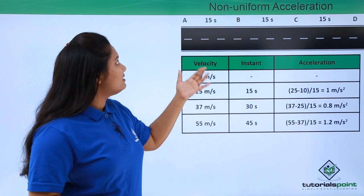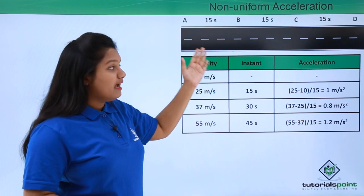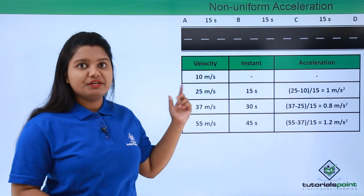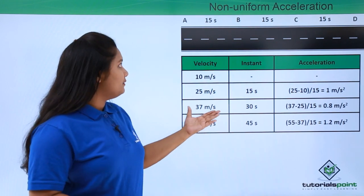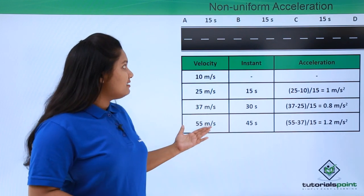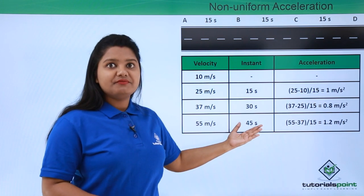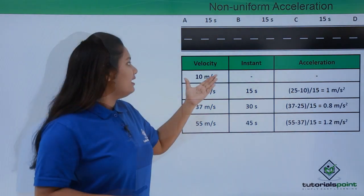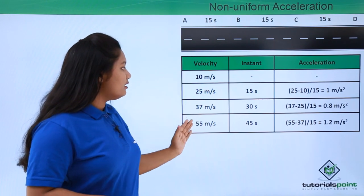Now let us look at another situation. The car has a velocity of 10 meters per second at point A. After 15 seconds its velocity becomes 25 meters per second at point B. At point C, reached after 15 more seconds, the velocity turns out to be 37 meters per second. At point D, reached after 15 more seconds — that is at the end of 45 seconds — the velocity was measured to be 55 meters per second.